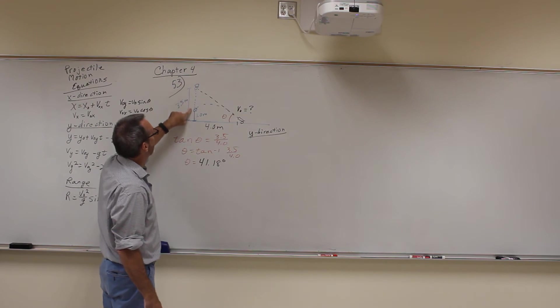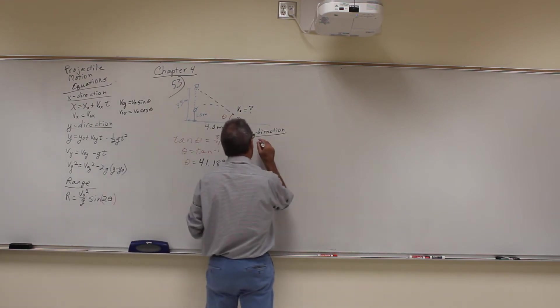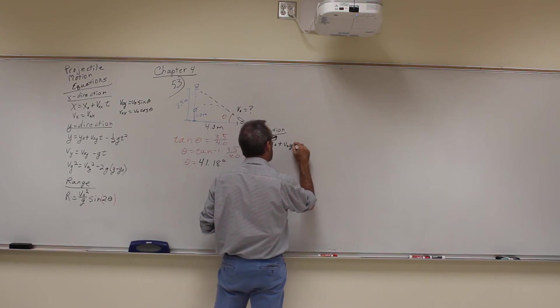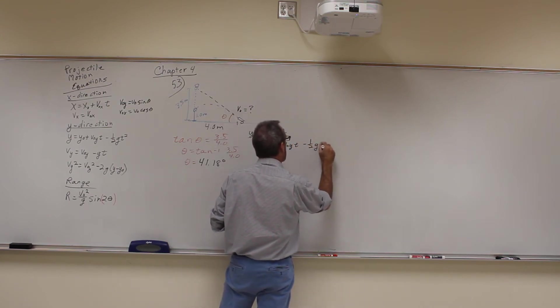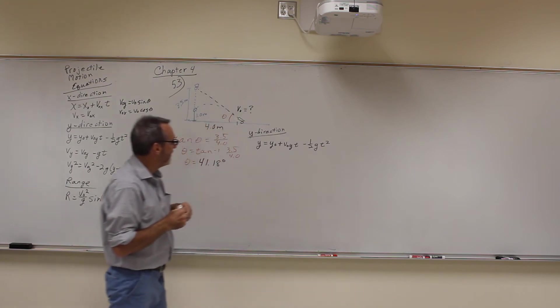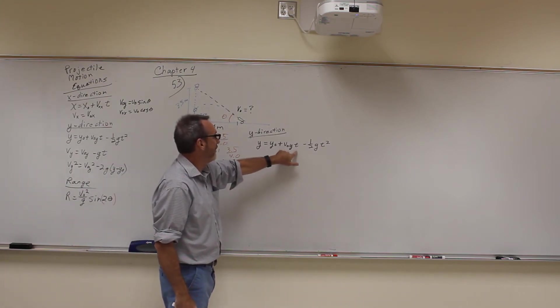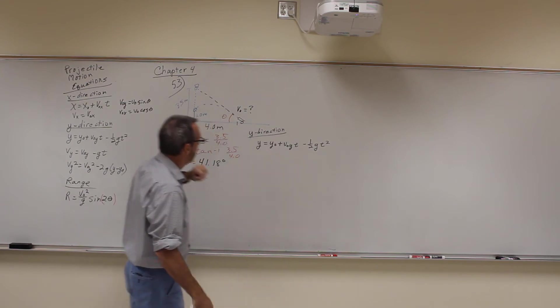When the y direction for this ball, we say we know we can use this equation. But does that do us any good? Because we don't know the initial velocity and we don't know the time. So we can't solve that equation. So that's not going to work. What about this equation?